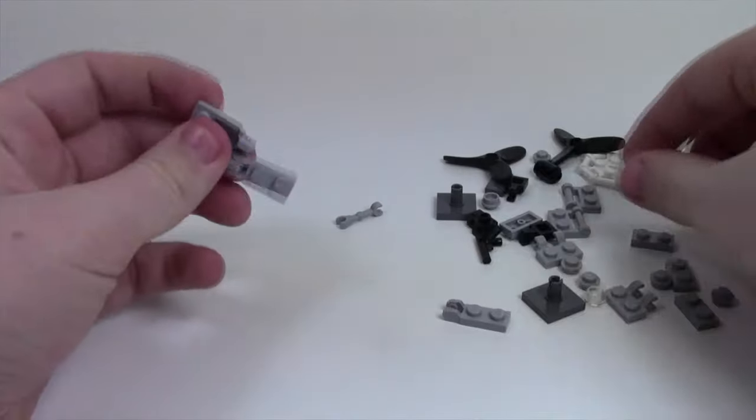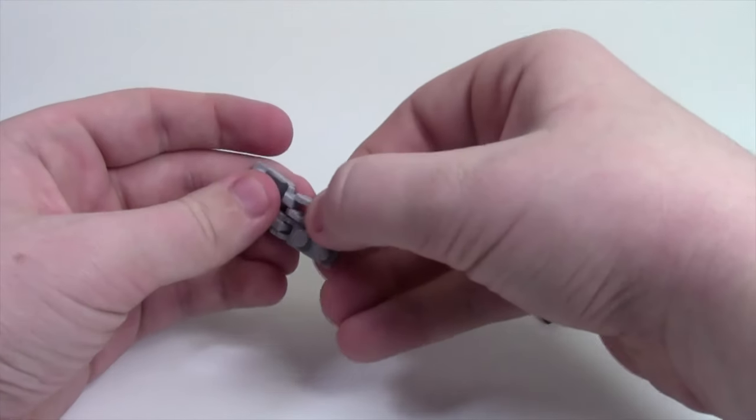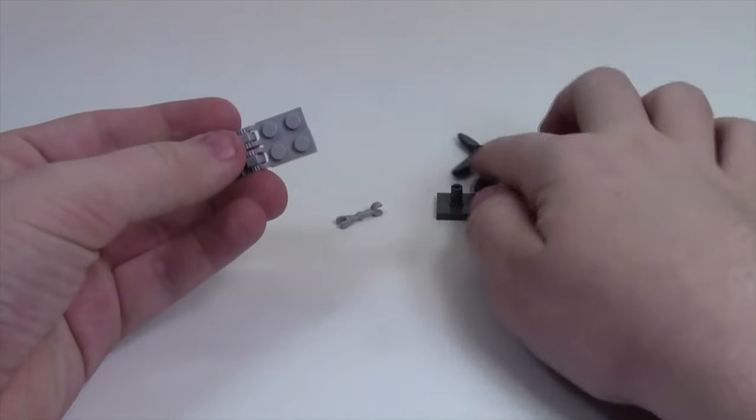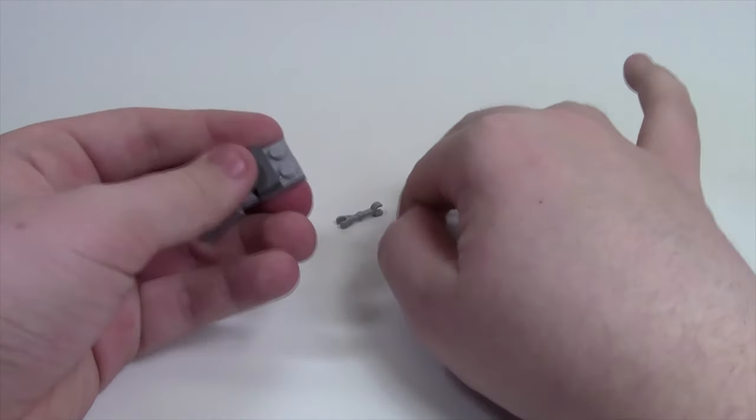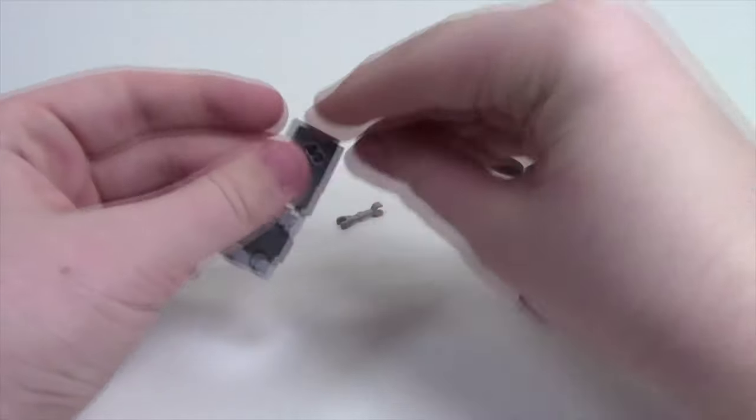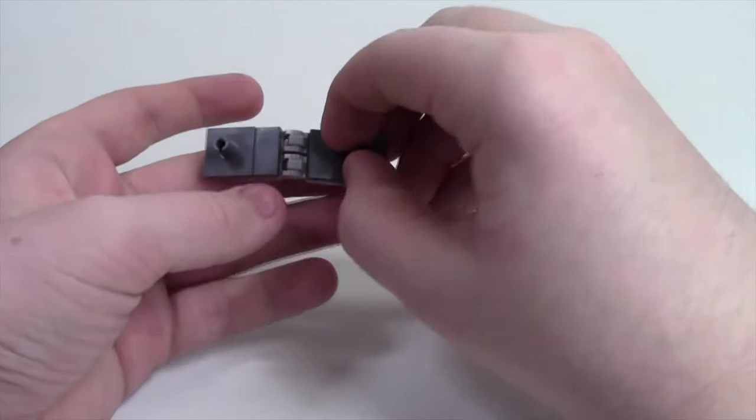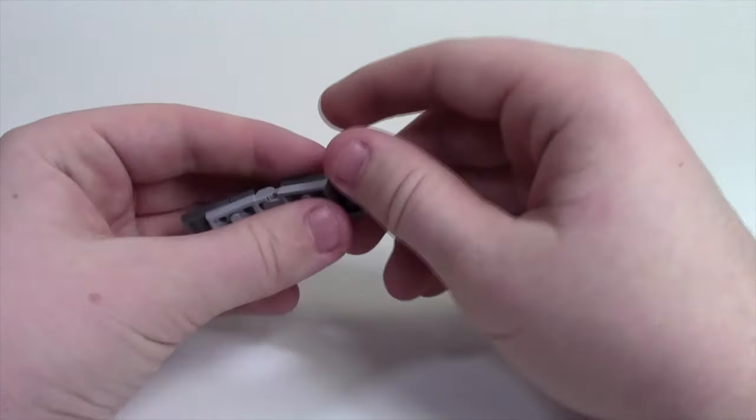So you take your grey pieces here with your tiles and you clip them together. You've got to put your tile on the other side like this. And then you take your two propeller pieces, or not propeller, but your axle pieces like so.